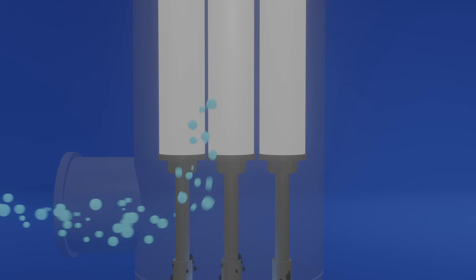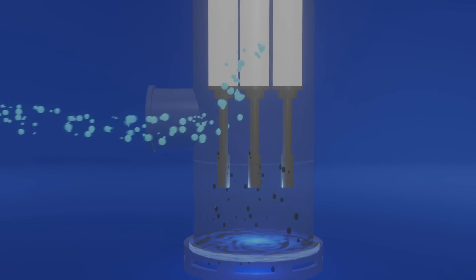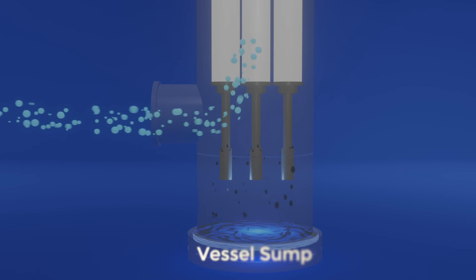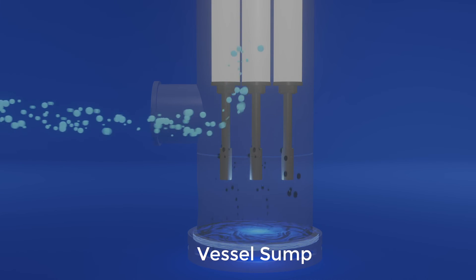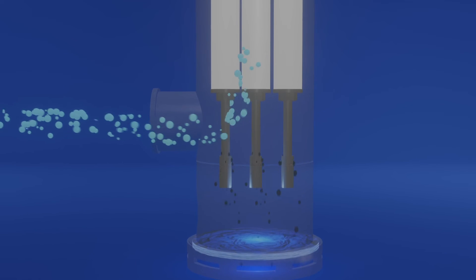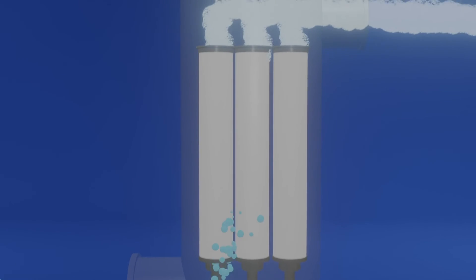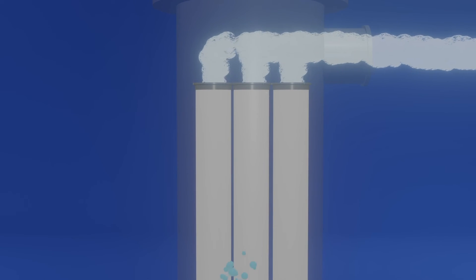As those droplets become larger, the continuous flow forces them to disengage from the fibers and drain into a sump held at the bottom of the main element core and then to a vessel sump at the bottom of the housing. Once completed, hydrogen gas is free from aerosols and exits at the top of the housing.